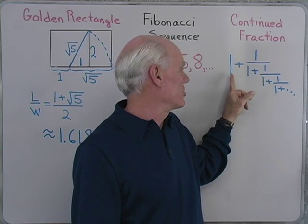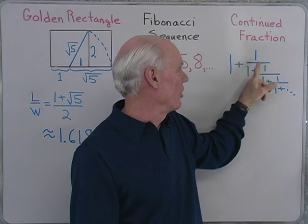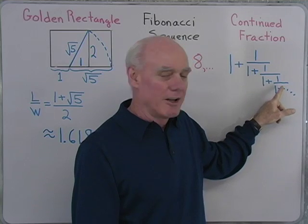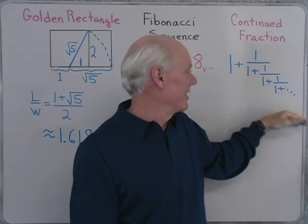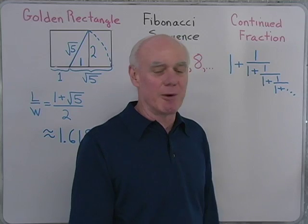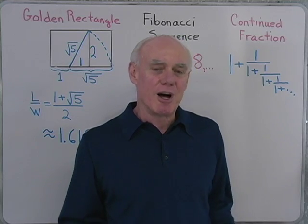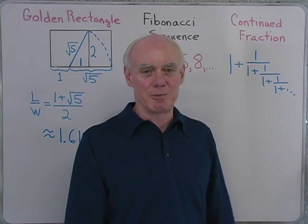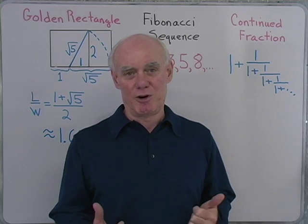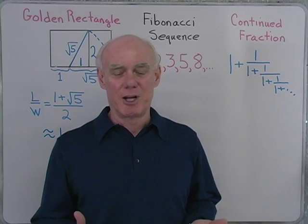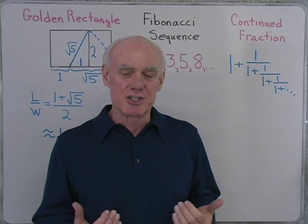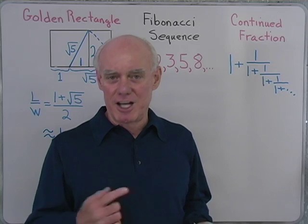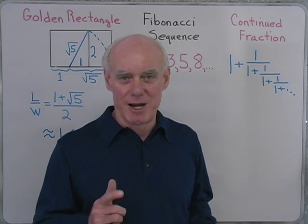This continued fraction starts like this, 1 plus 1 over 1 plus 1 over 1 plus 1 over, so on and so forth, on down like that. It continues an infinite number of levels down. So the problem with it is there's no way to get down to the bottom to work our way back up to simplify this. But if we use what we know about the golden rectangle and the Fibonacci sequence and look at this in stages, we'll be able to simplify it. So I'm going to stop for a second and put some things on the board and then come right back.